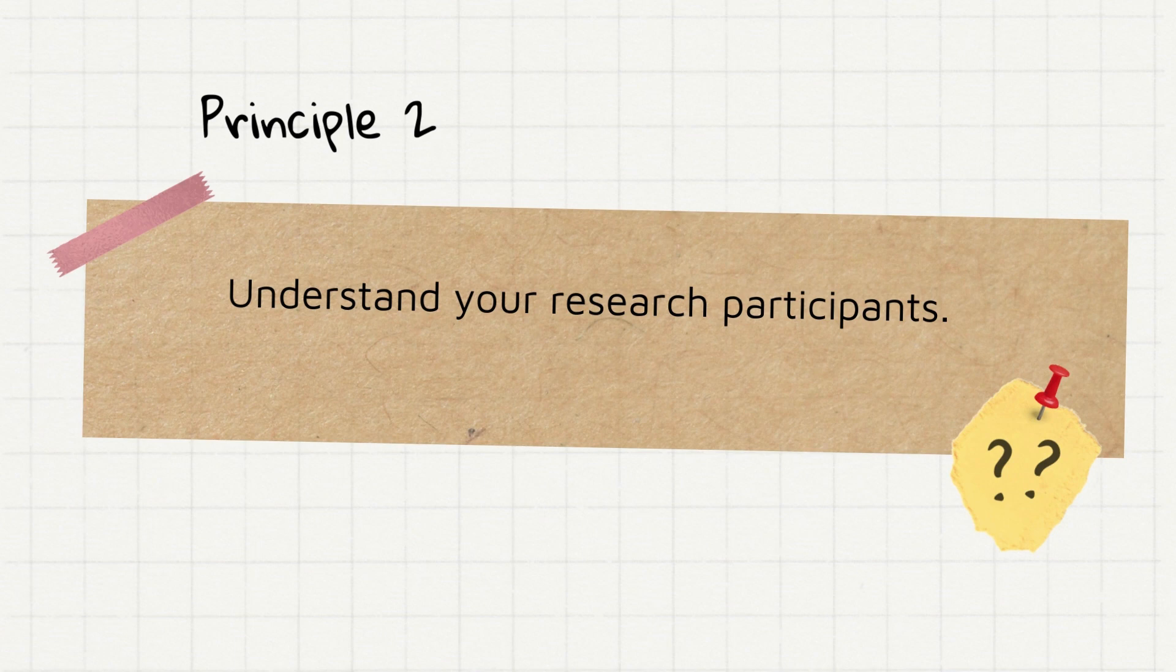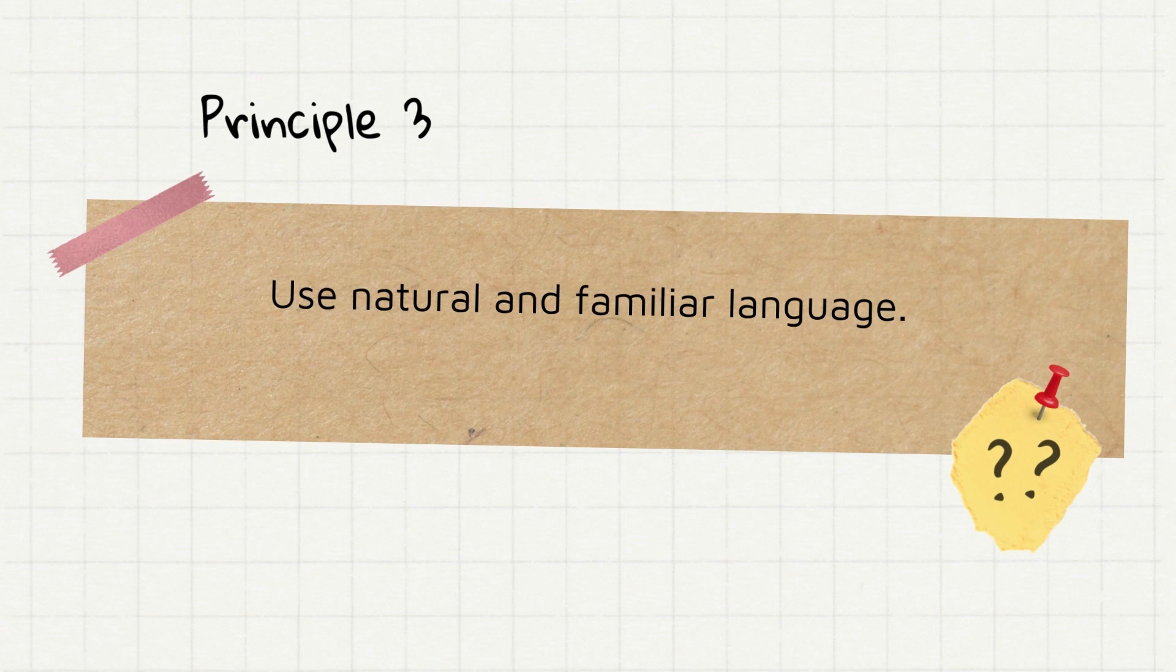Principle 3 is connected to this. Use natural and familiar language. Use simple and direct language that fits their level of understanding. Consider their age, educational attainment, and any cultural or social barrier that may affect their comprehension. Do not put too much jargon or technical words. However, if it cannot be avoided, then you have the responsibility to explain the meanings and the contexts to them.